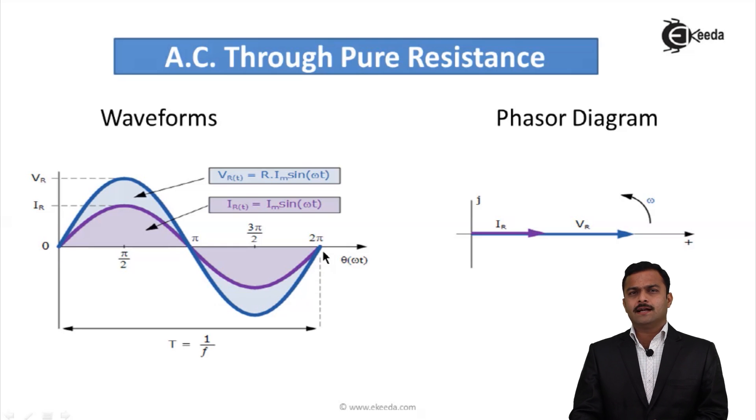Whenever I draw a phasor diagram, V is the reference because we have considered phase for that quantity as 0, so it is along the positive x-axis direction. I am getting current also as Im sin(ωt) having phase angle 0, so that is also along the positive x-axis direction. Both the phasors are in line, so I can say V and I both are in phase for a resistive circuit.